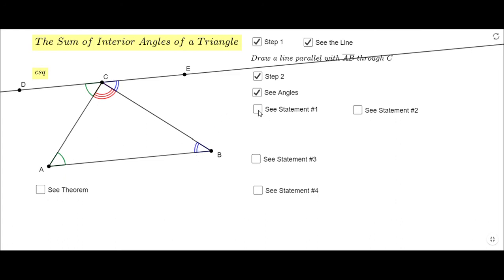When I click see statement one, we notice that angle DCA, the green one, is congruent to angle A, the original one of the triangle, because they are alternate interior angles. Remember, DE is parallel to AB and AC is the transversal. So obviously the measure of DCA will be equal to measure of angle A.